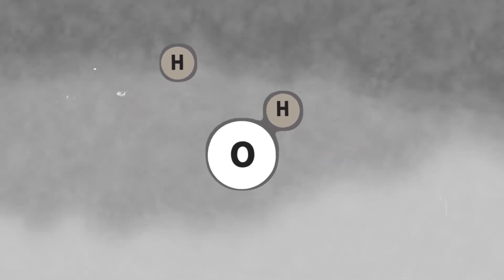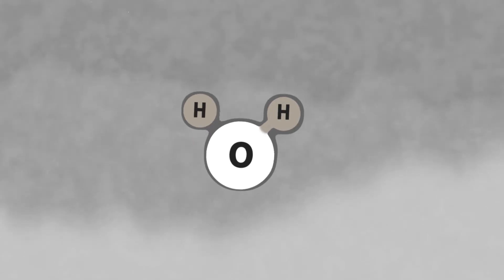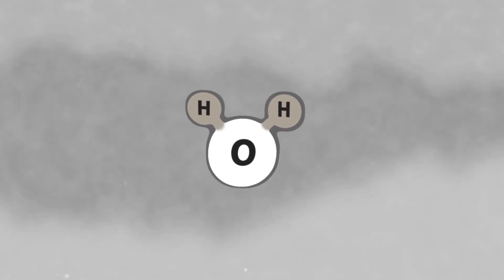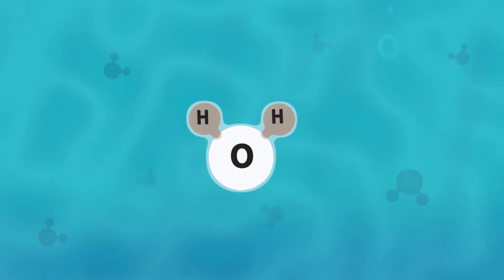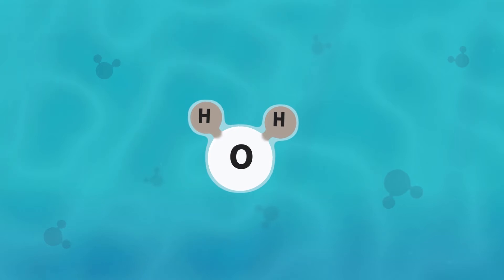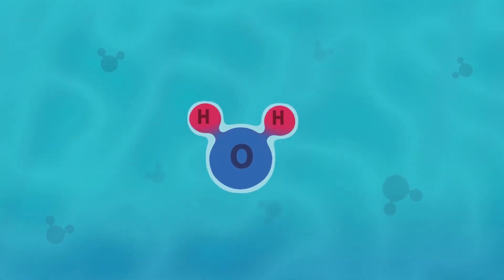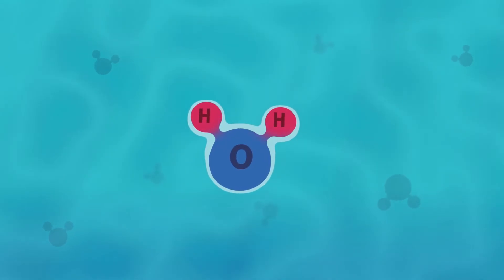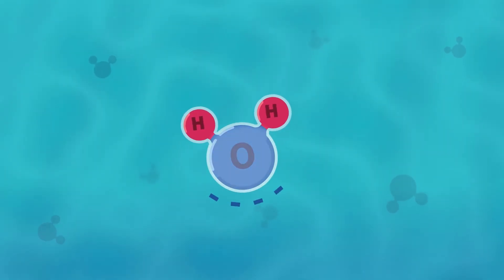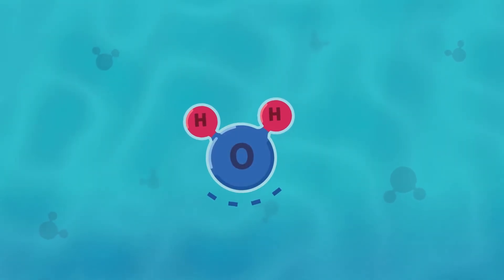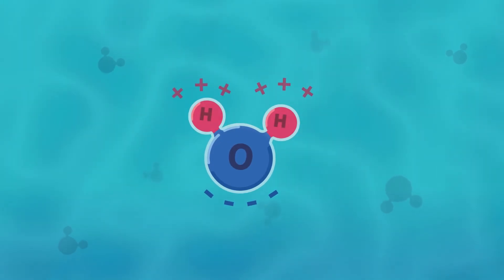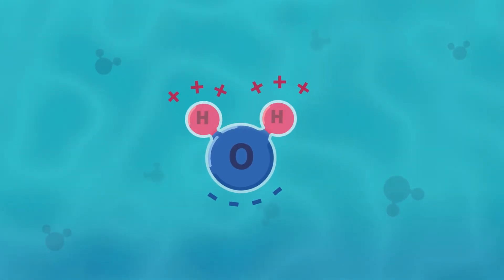Once upon a time, there were two hydrogen atoms and one oxygen atom. The atoms started to share electrons and thus formed a water molecule. However, this sharing was not equal, as the oxygen atom pulled electrons away from the hydrogen atom. This created a partial negative charge around the oxygen and a partial positive charge around the hydrogen.